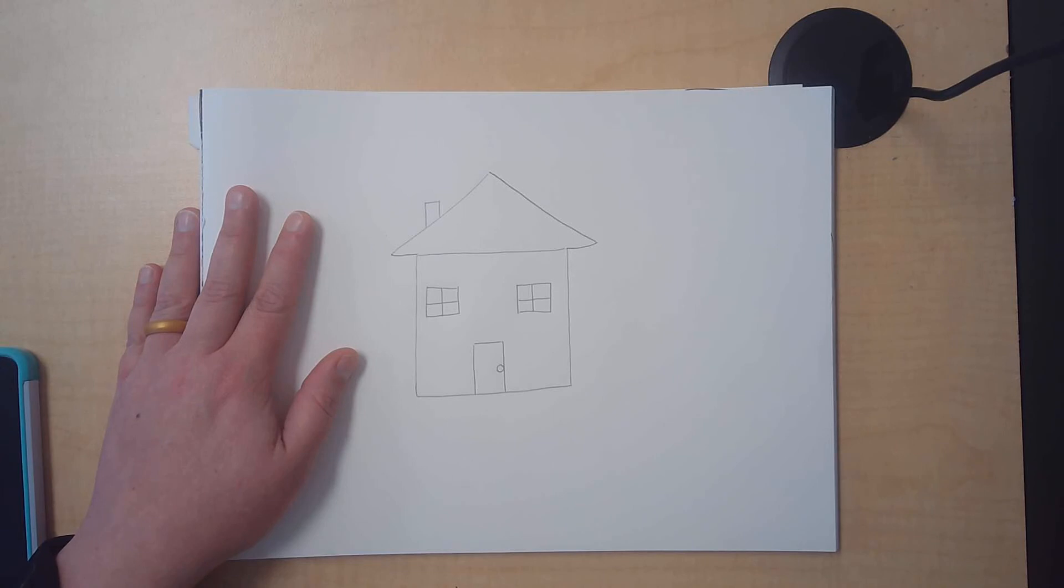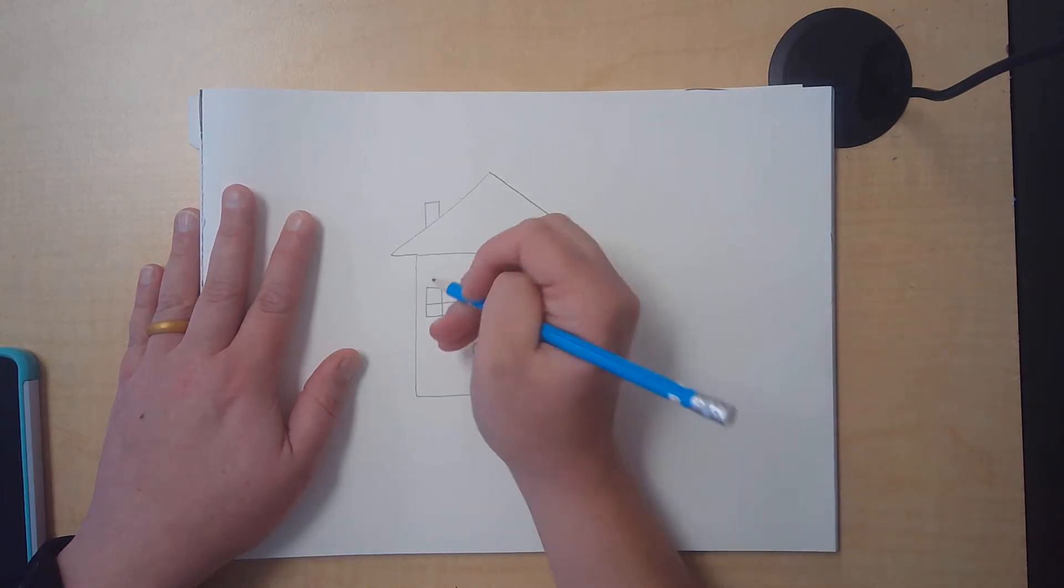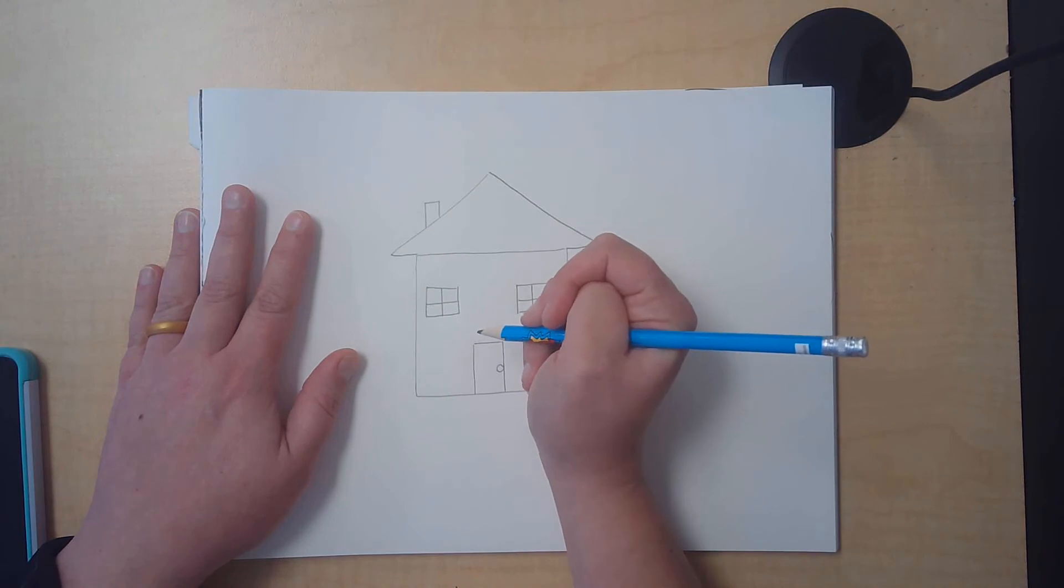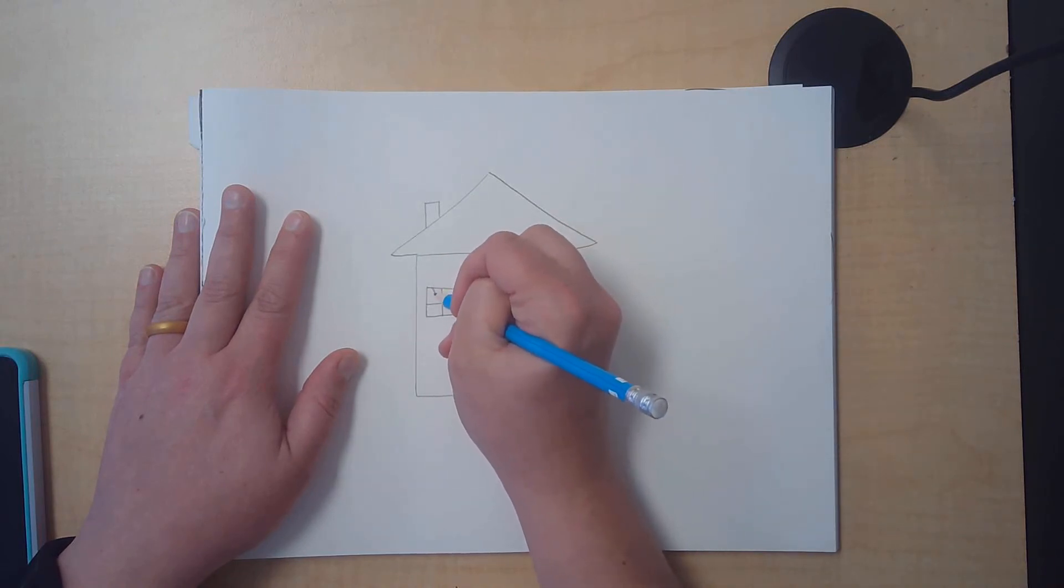Think, think, think. Ooh, I have an idea. What about some curtains? For curtains I can use a curved line and a slanty line. A curved line and a slanty line.